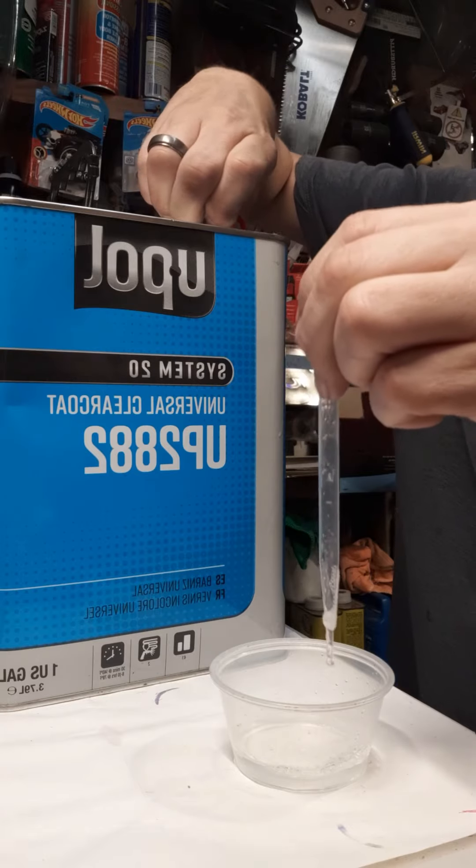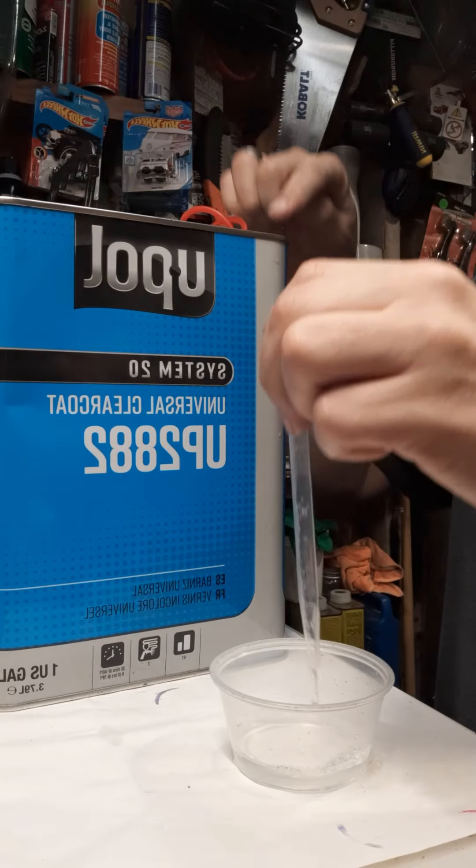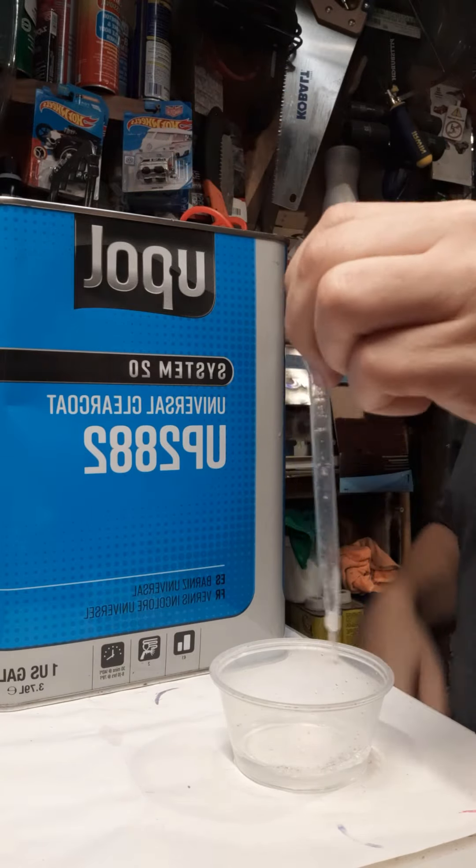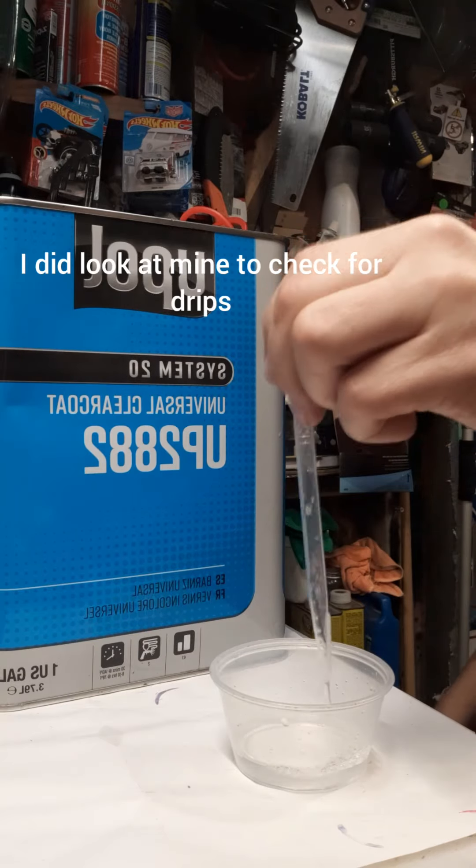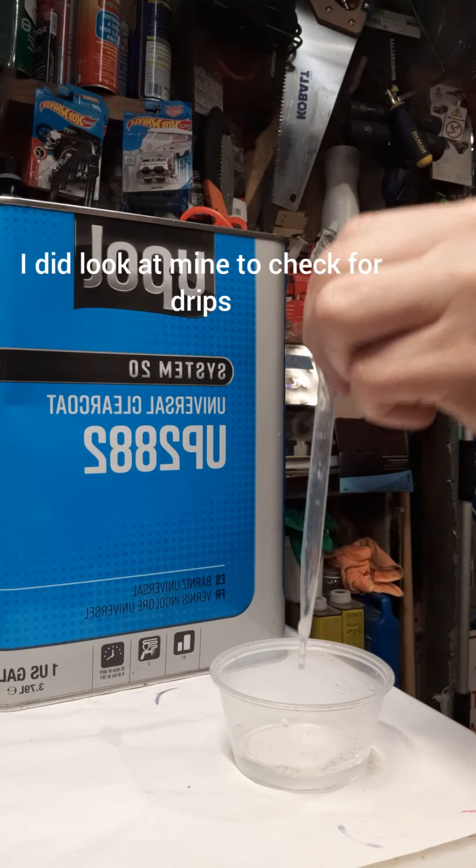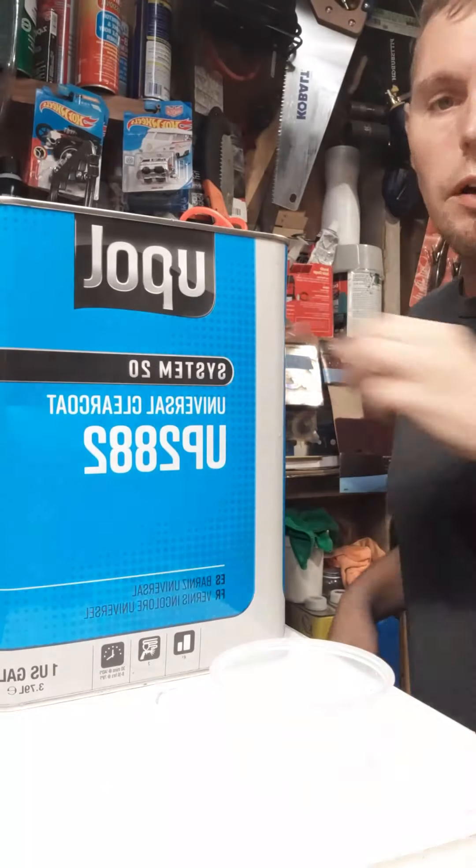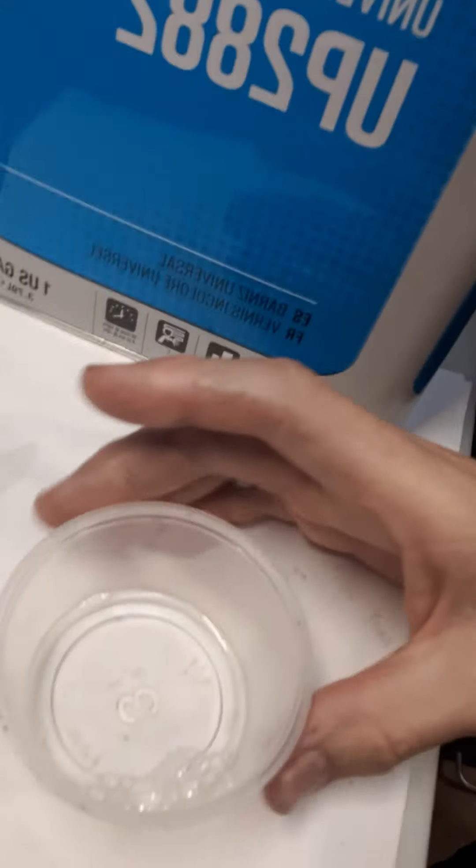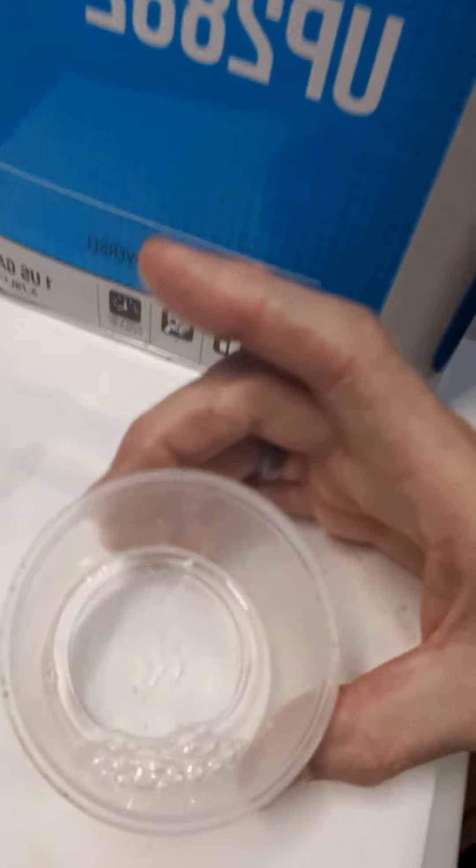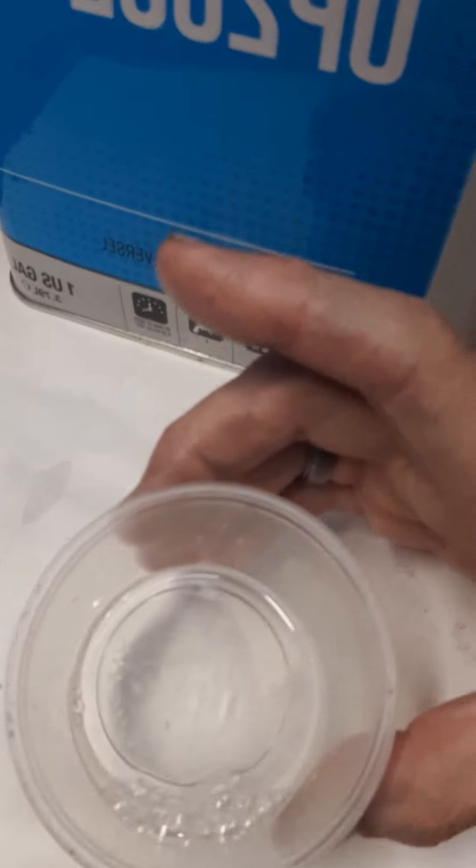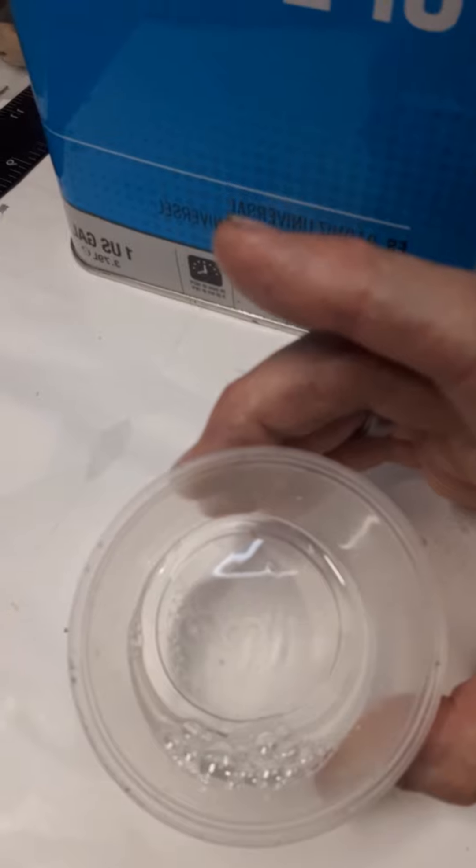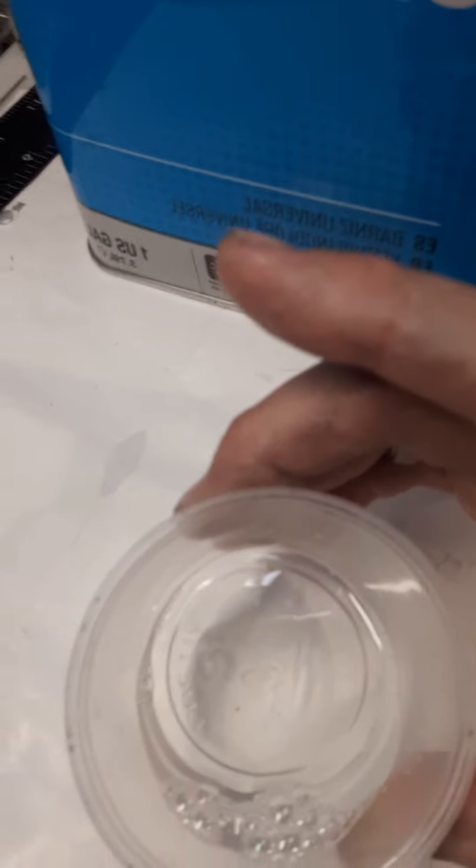Always make sure when you're closing these up, if you get any on the cap or in the threads, you really want to clean it off because it can seal your lid and make it very difficult next time. So this is about how much clear coat I'm going to use, maybe a little over a half an ounce, maybe close to an ounce.